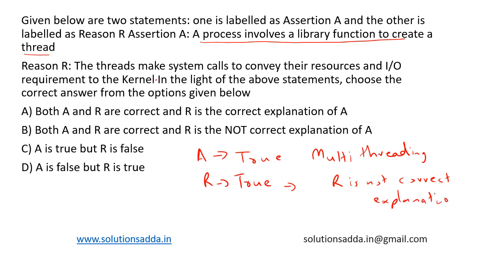Based on the options, we can say both A and R are correct, but R is not the correct explanation of A. Therefore, option B is the right choice.